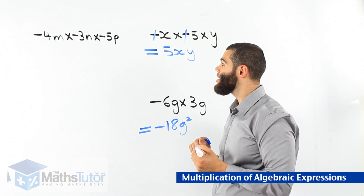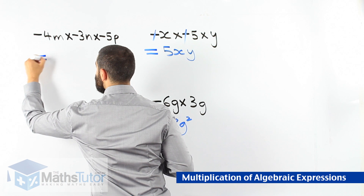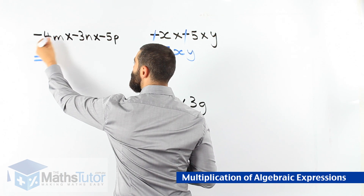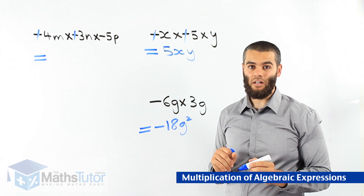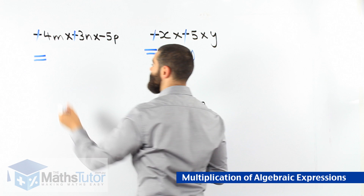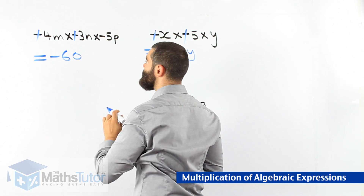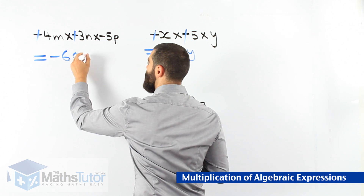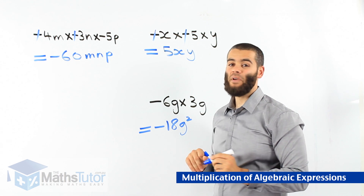Last example: negative 4m times negative 3n times negative 5p. We multiply everything together — we don't look for like terms at all. With multiplication you times everything together. Negative 4 times negative 3: the two negatives cancel, so 4 times 3 is 12. Then 12 times negative 5 is negative 60. Our pronumerals are m, n, and p, so our final answer is negative 60mnp.